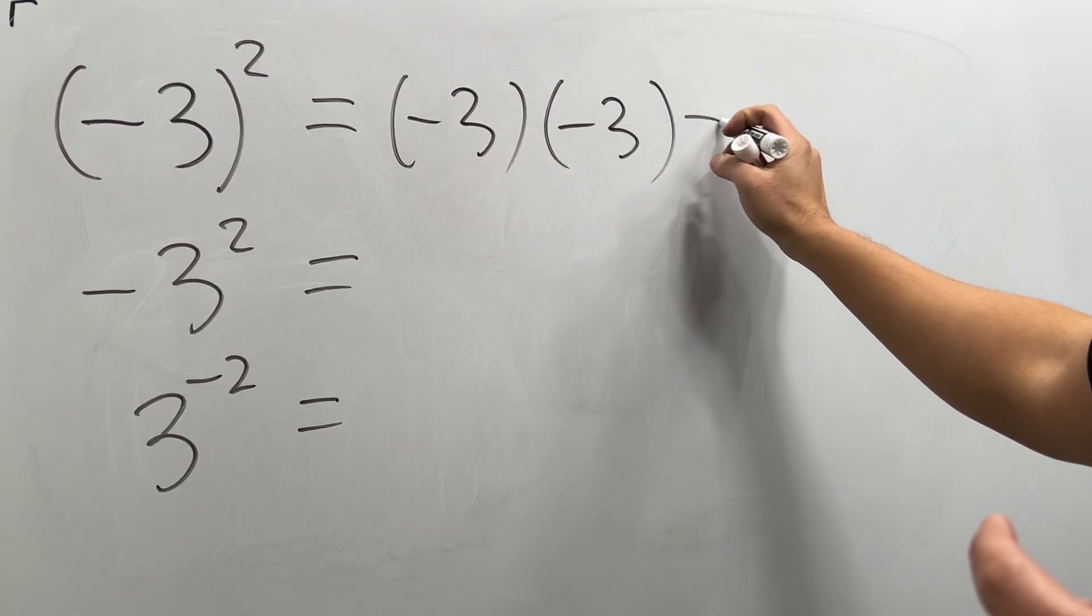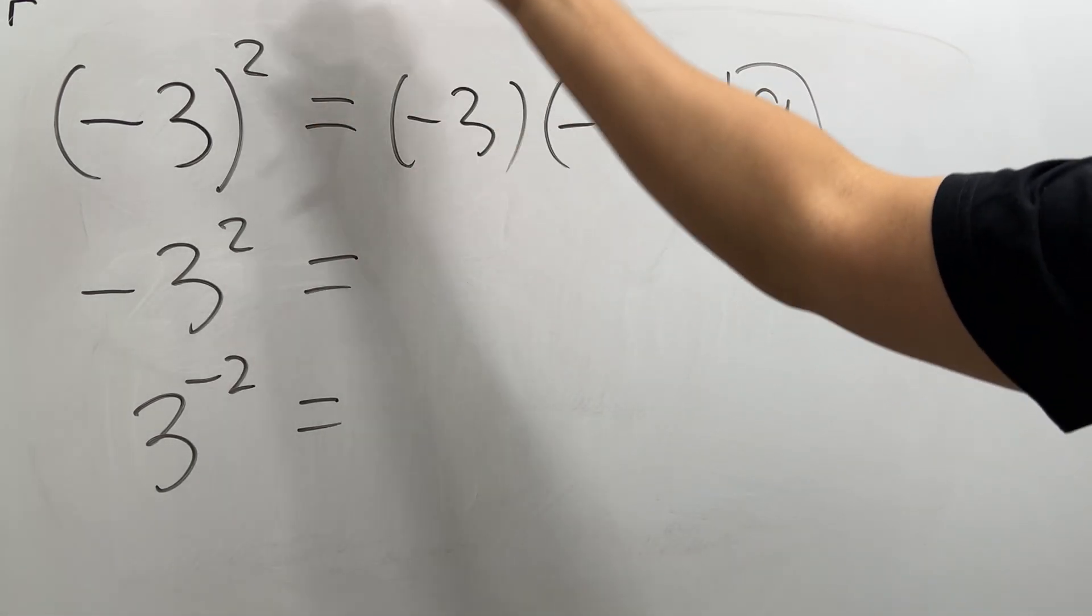So negative three times negative three, we get positive nine. That's the answer for the first one.